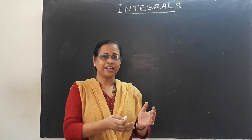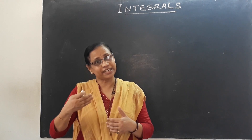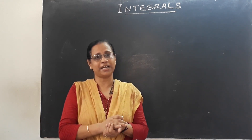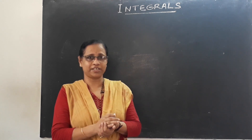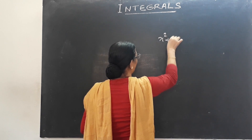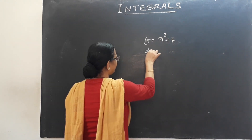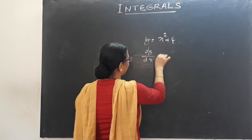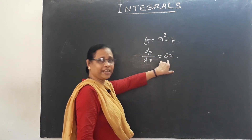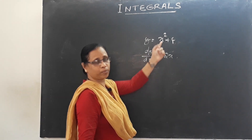Differentiation reduces a value, and integration also relates to that value. They are just inverse operations — integration and differentiation. That is why, if we take x²+4 as a function and differentiate it, dy/dx is equal to 2x. If we then integrate 2x, we get back x²+4.